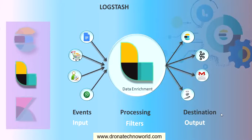Each step in Logstash can be used as a plugin. For example, the input plugin can be a file, which means Logstash can read events from an input file like a CSV or text file. You can also send events via HTTP, load data from relational databases like DB2, Oracle, or SQL Server, or listen to Kafka queues. There are several other input plugins supported by Logstash beyond these basic examples.